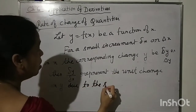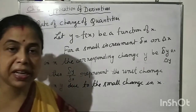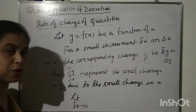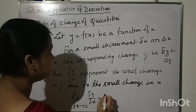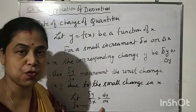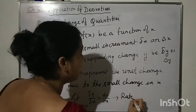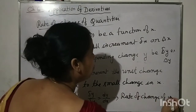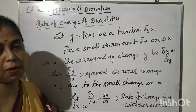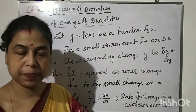This represents the change per small change in x. In the limiting case, when delta x tends to 0, delta y by delta x is symbolically noted as dy/dx. This represents the instantaneous rate of change of y with respect to x. In this chapter we will discuss the rate of change of y with respect to the change in x.